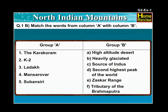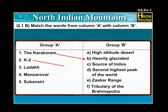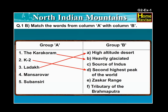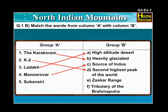Answers: Number one, the Karakoram is heavily glaciated. Number two, K2 is the second highest peak of the world. Number three, Ladakh is a high altitude desert. Number four, Mansarovar is the source of Indus. Number five, Subansiri is the tributary of the Brahmaputra.